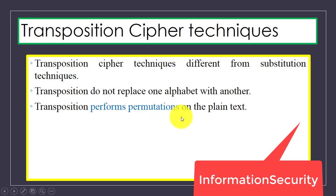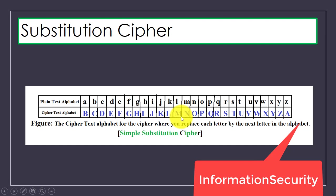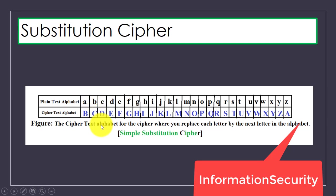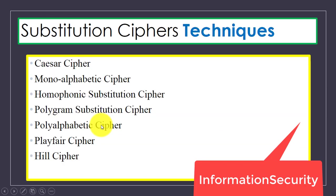This is an example of a simple substitution cipher. Here you can see each plain text letter is replaced by the next letter of the alphabet. As you can see, we have 'a' and the next to 'a' is 'b', so we replace 'a' by 'b', 'b' by 'c', 'c' by 'd'.